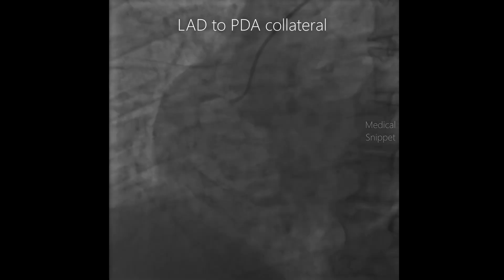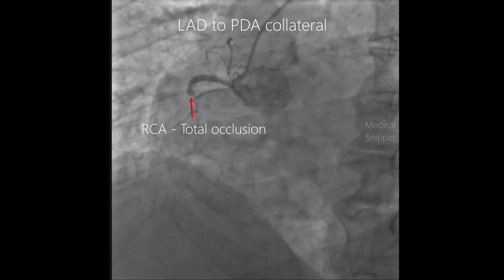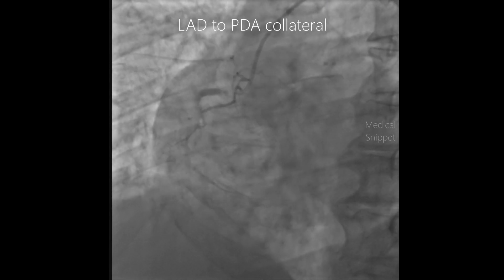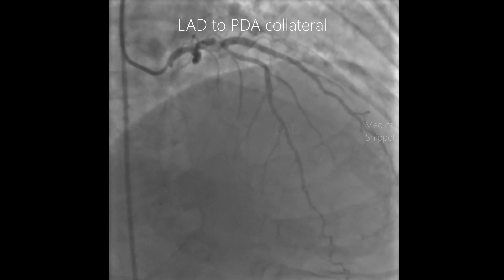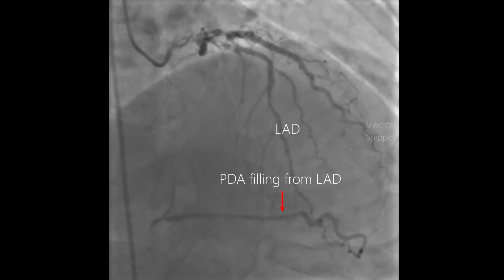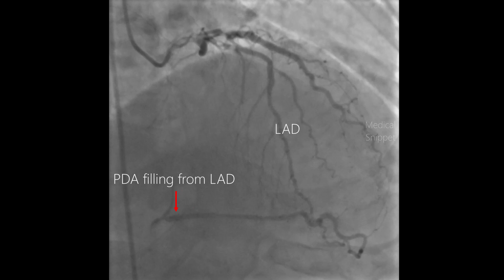The third case is collateral circulation from the left anterior descending artery to the posterior descending artery. In this angio shot, there is total occlusion of the right coronary artery, and the posterior descending artery is being filled from the left anterior descending artery.